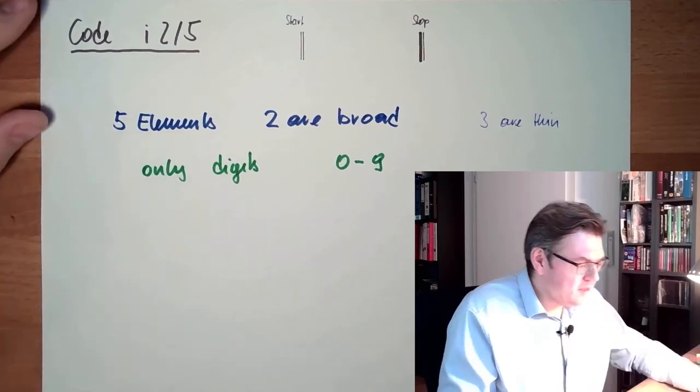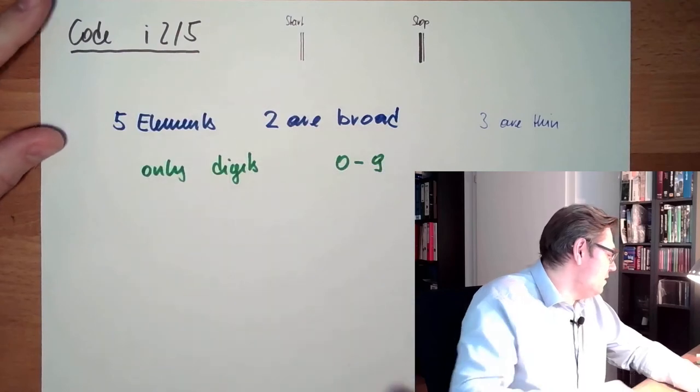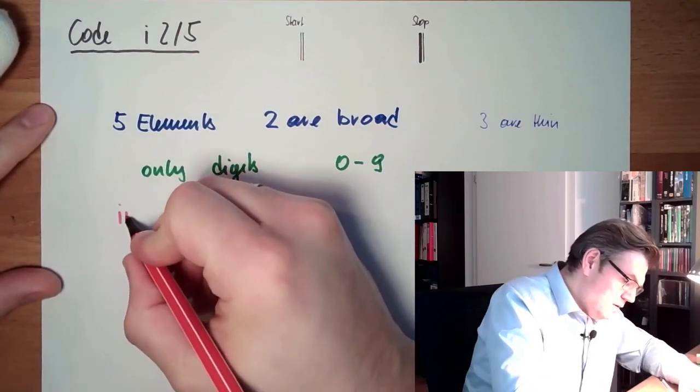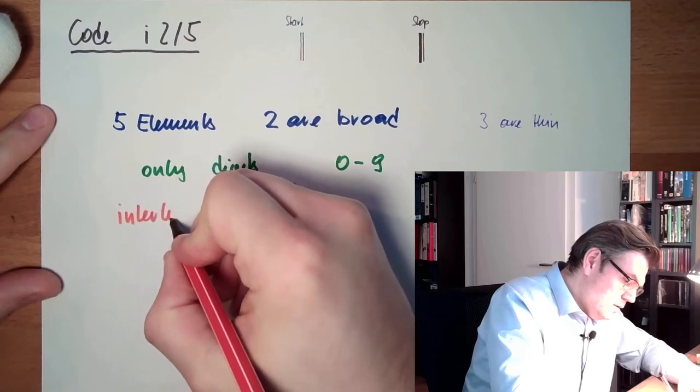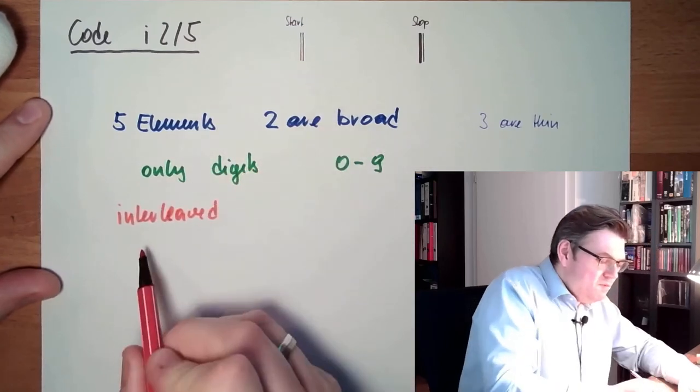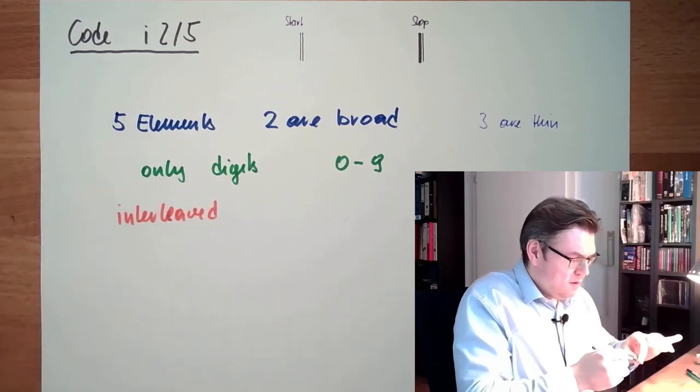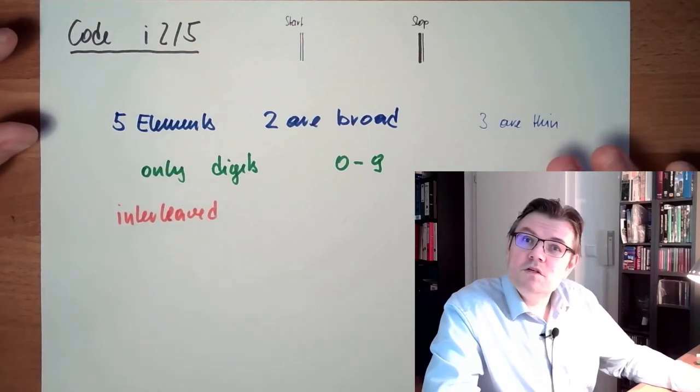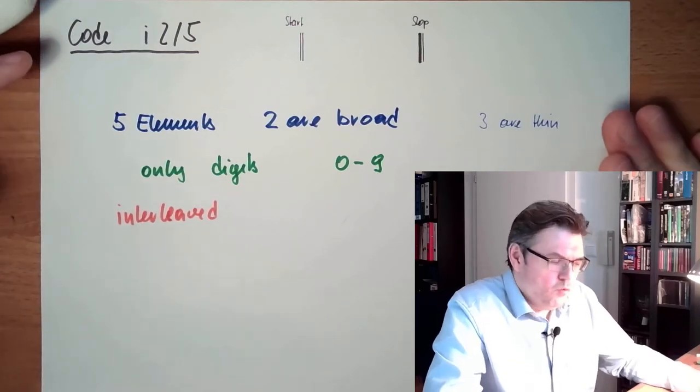And now we're coming to this interleaved. What does it mean? Well, the first digit, the combination of the first digit, I don't know, broad, broad, thin, thin, thin, or whatever.